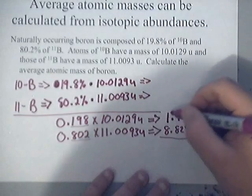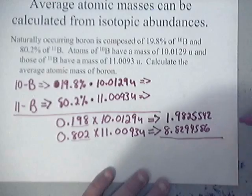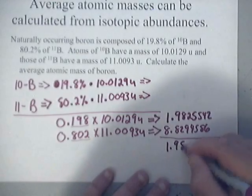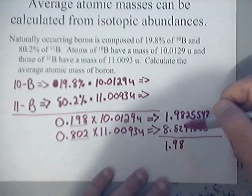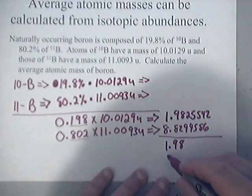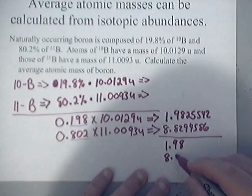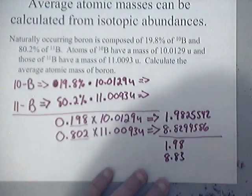So basically, this 1.98 yada yada yada should really just be 1.98. Okay. And this 8.82 yada yada yada should be really 8.83. Okay.